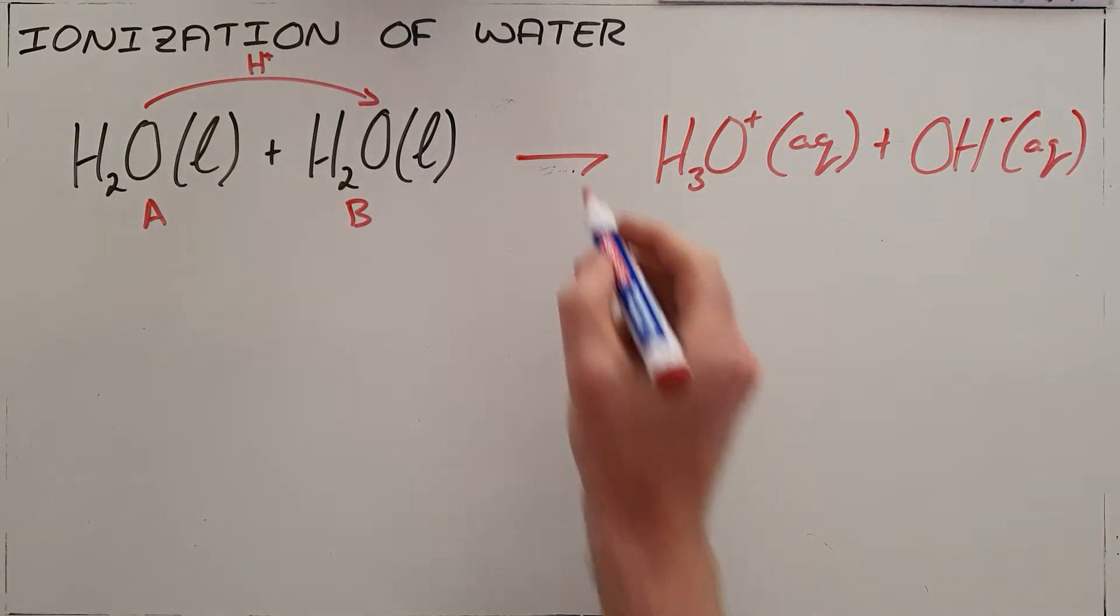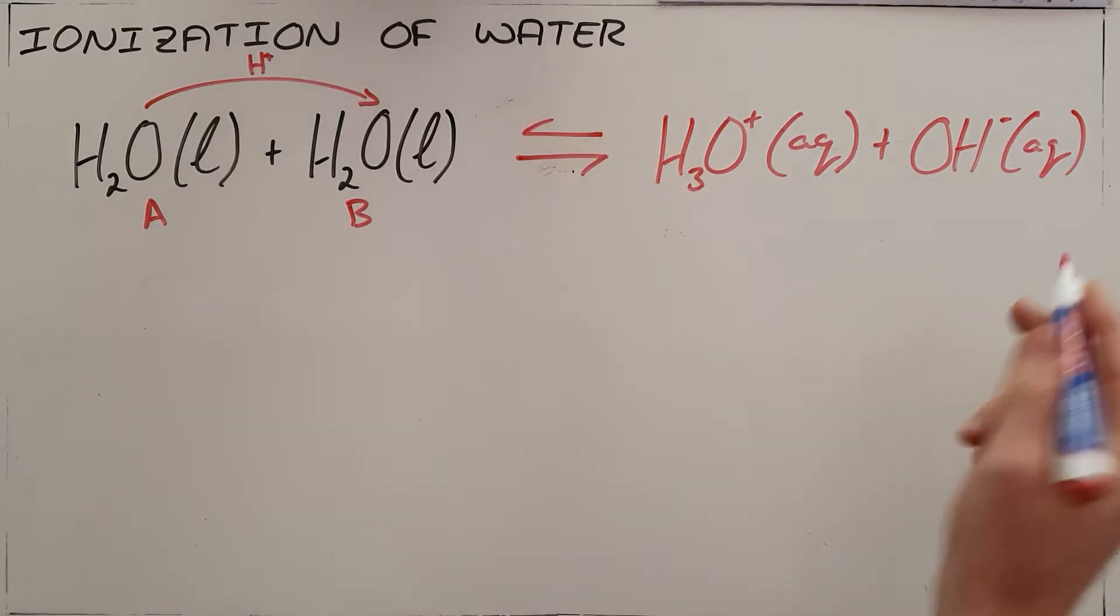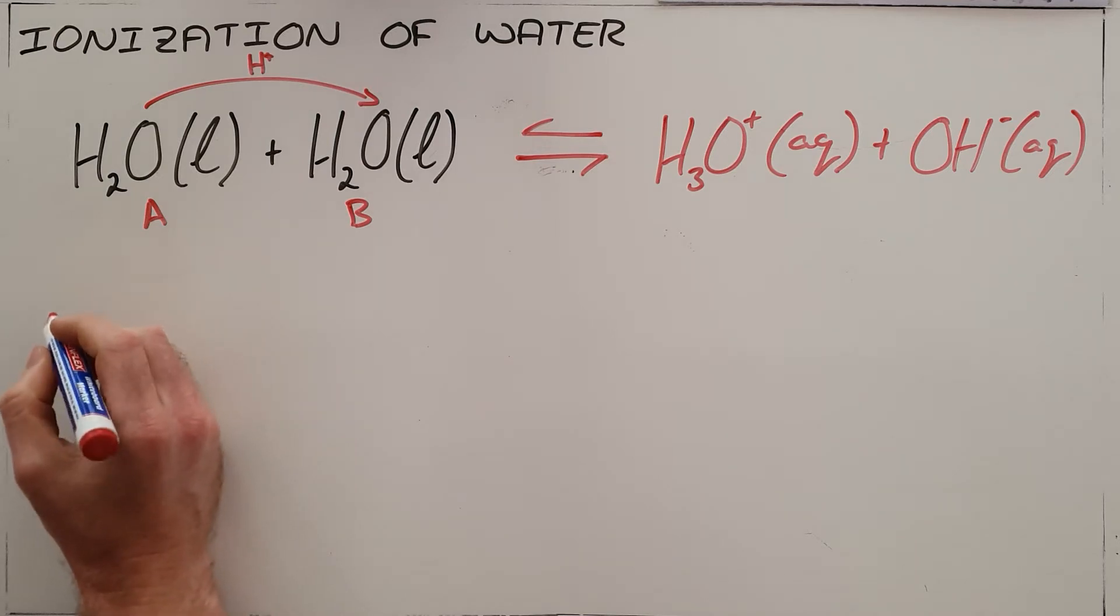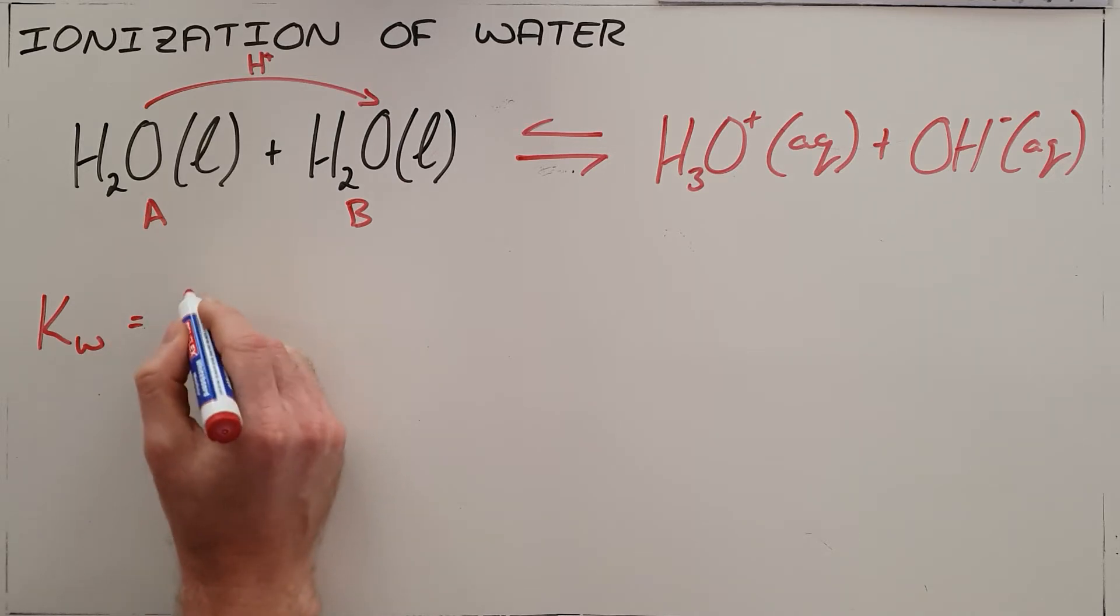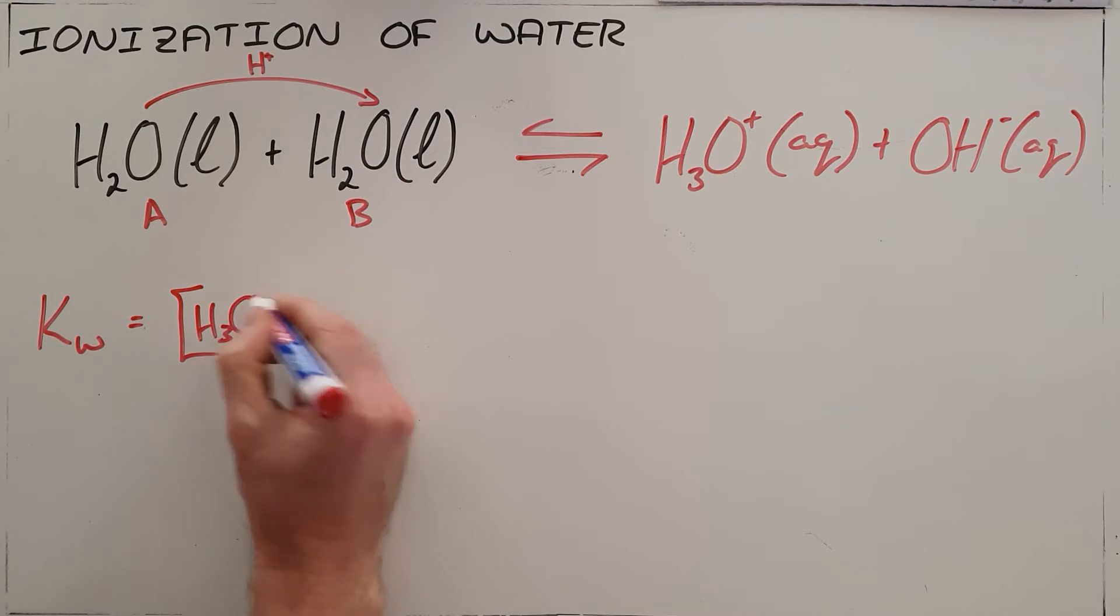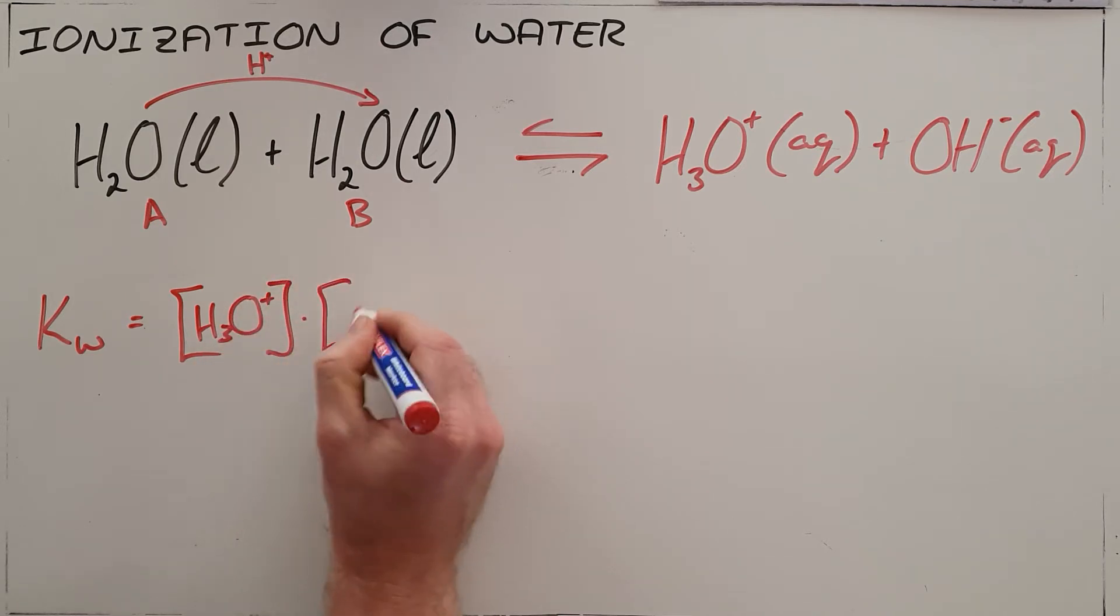Fortunately, this is a reversible reaction and since it is a reversible reaction, that means this reaction has an equilibrium and we can calculate the equilibrium constant, which is found by the product of the concentration of the two products, hydronium and hydroxide.